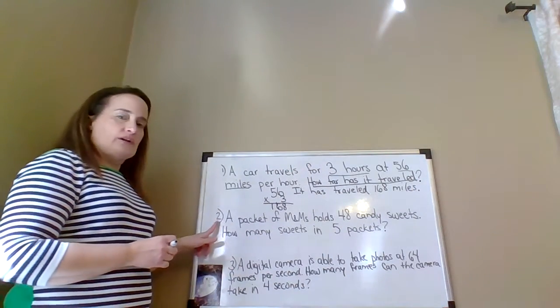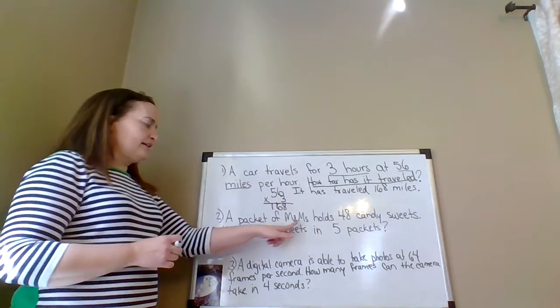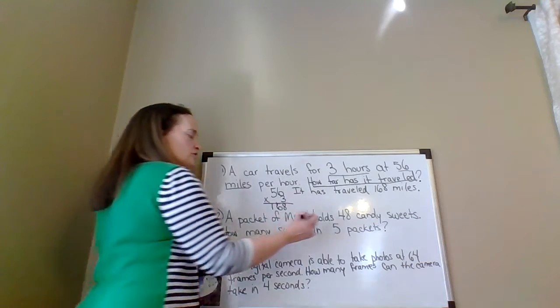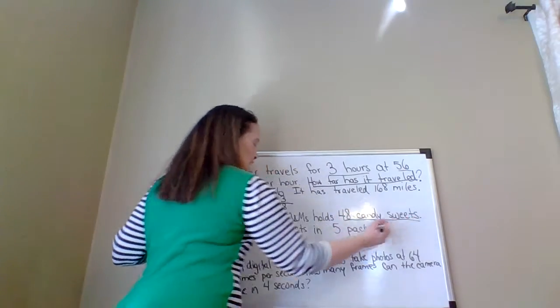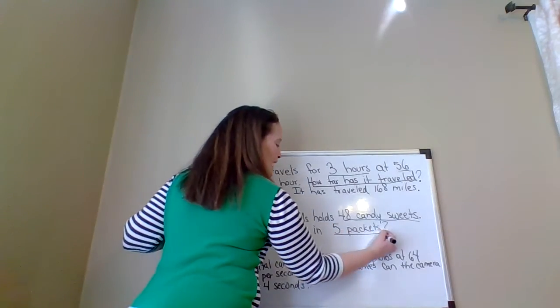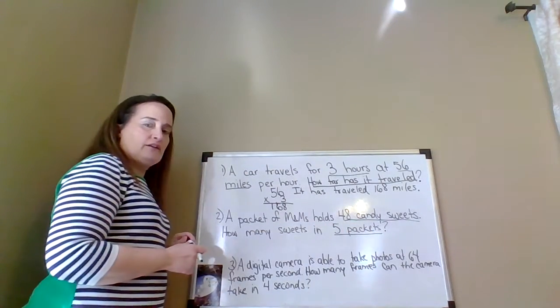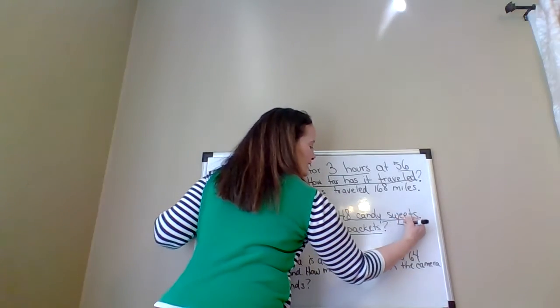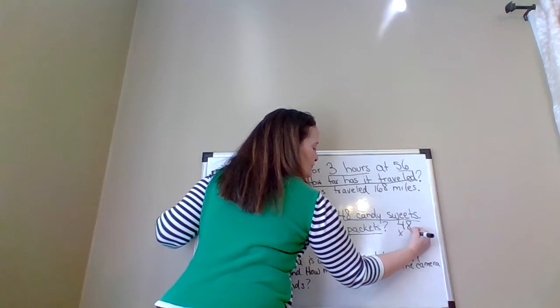The next question says a packet of M&Ms holds 48 candy sweets. How many sweets in five packets? So here we're going to multiply 48 times 5.